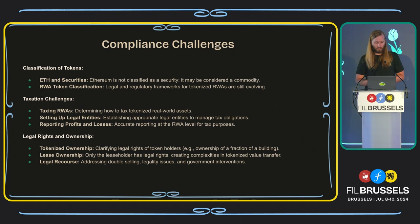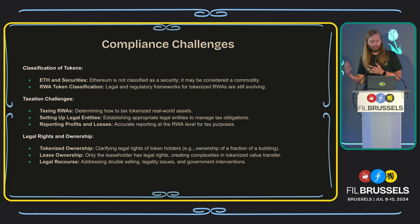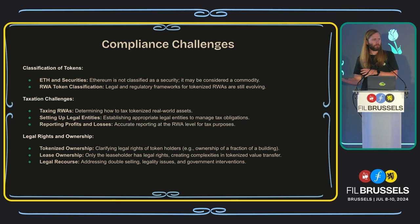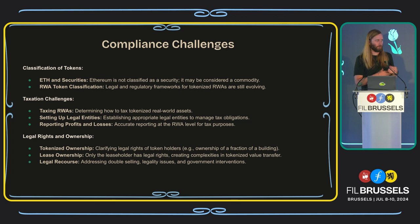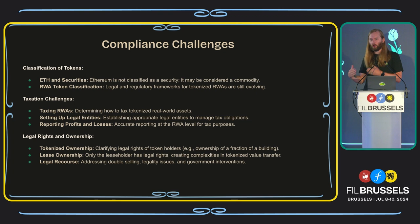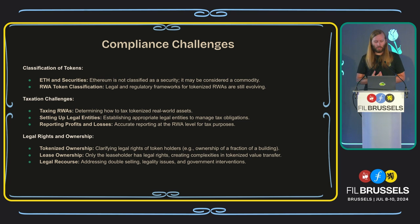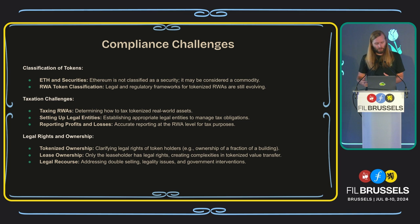Some of the challenges right now in America involve securities. ETH and securities — Ethereum is not classified as a security, we don't think, because now it has an ETF, so it might be a commodity. But just the fact that we don't have it in black and white makes it hard to engage with this space in compliance. What is the classification of an RWA token? It's not hardened by law. Without that legal and regulatory framework, it is difficult to convince giant, risk-averse companies to tokenize their assets.